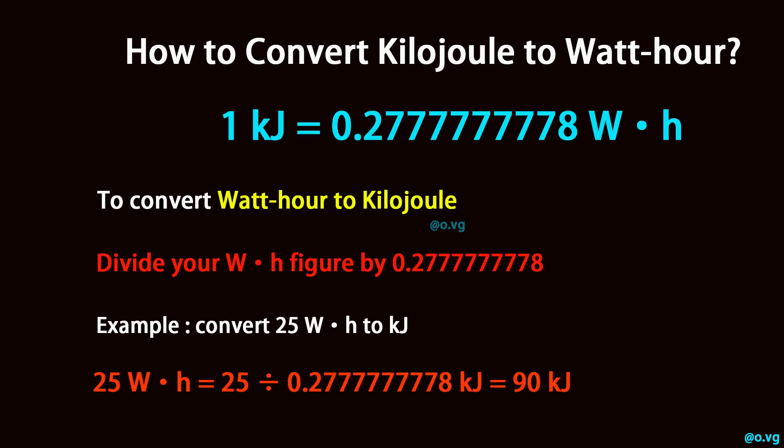To convert watt-hour to kilojoule, divide your watt-hour figure by 0.2777777778. Example: convert 25 watt-hour to kilojoule. 25 watt-hour equals 25 divided by 0.2777777778 kilojoule, which equals 90 kilojoule.